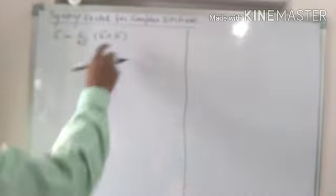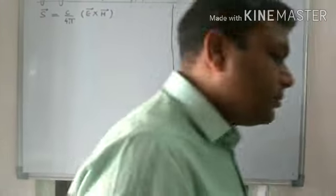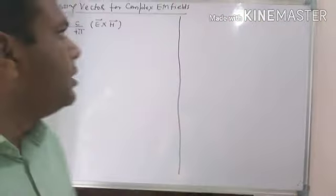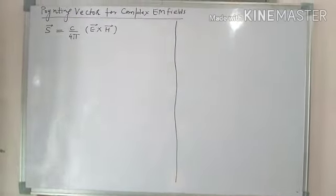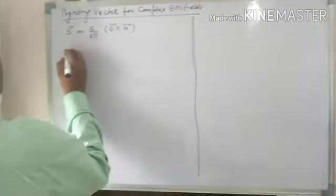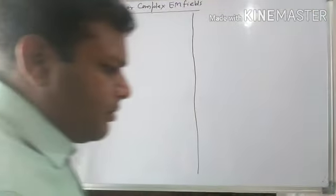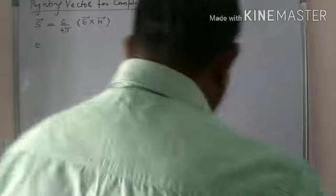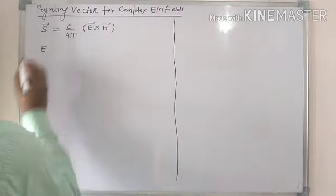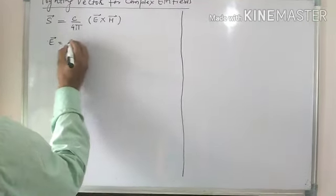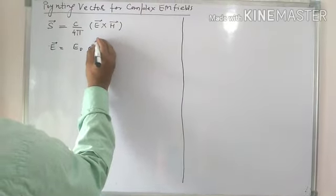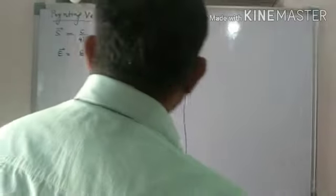Now we want to see what happens to this Poynting vector when the E and H are complex things. So obviously, if we have started with E as E₀ e^(iKx - ωt).